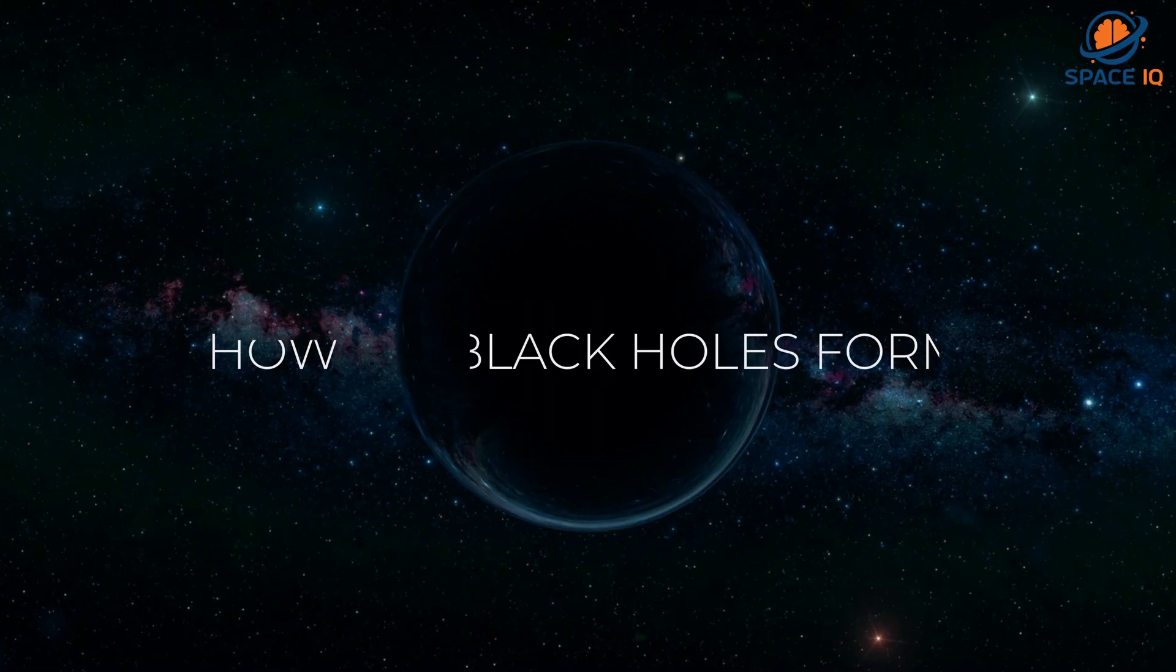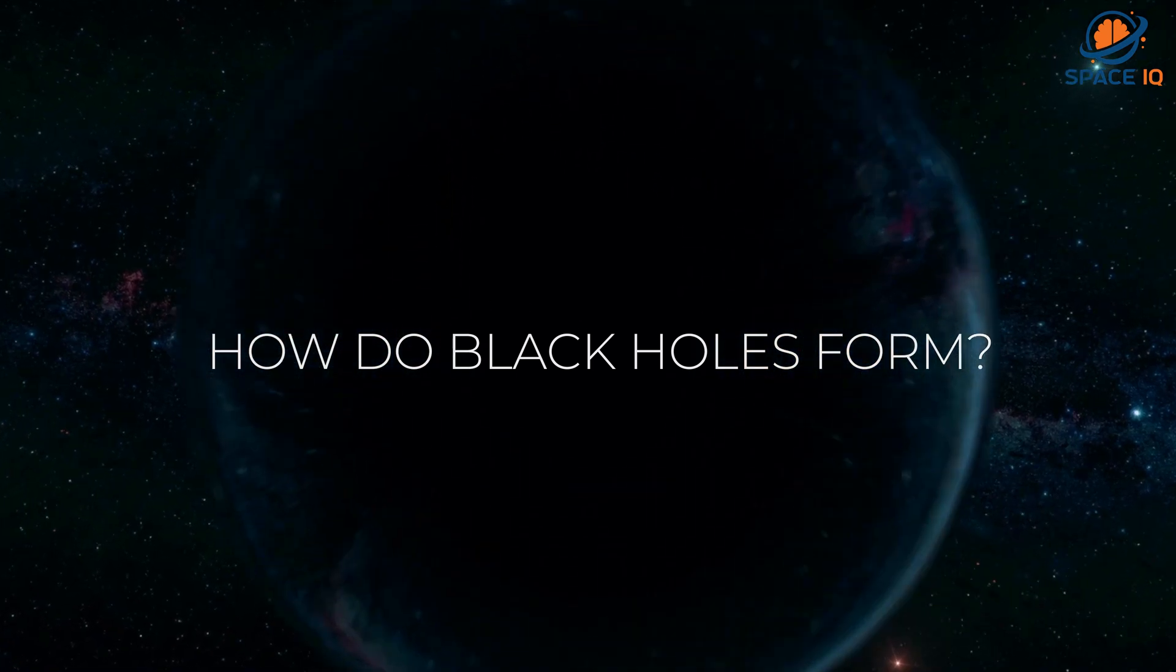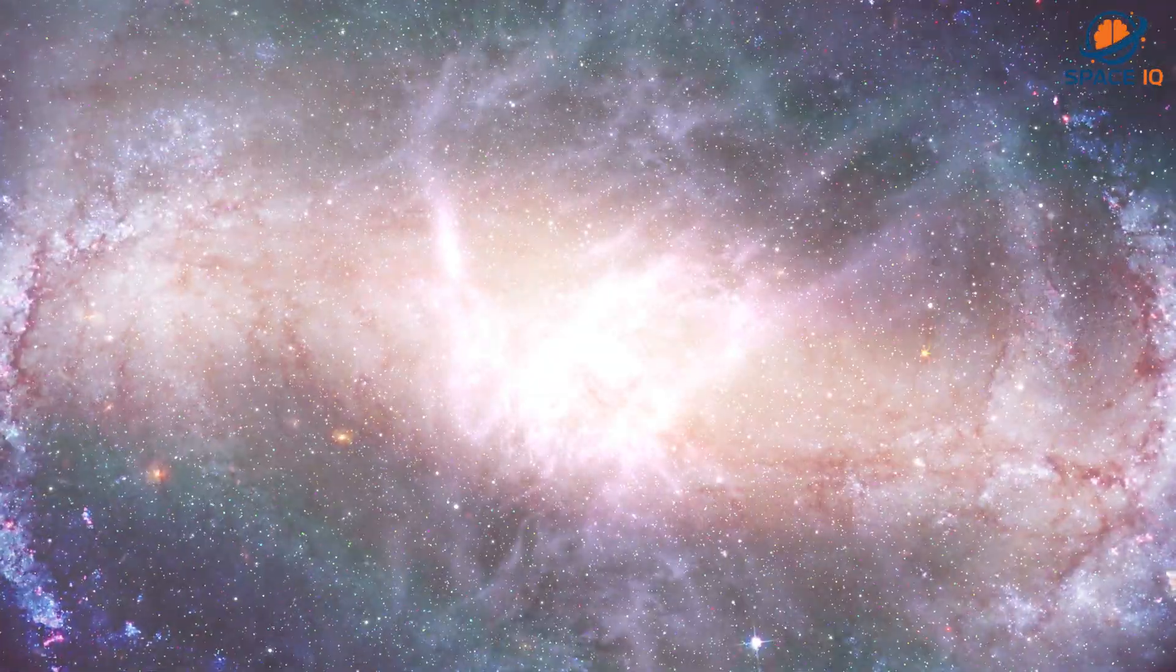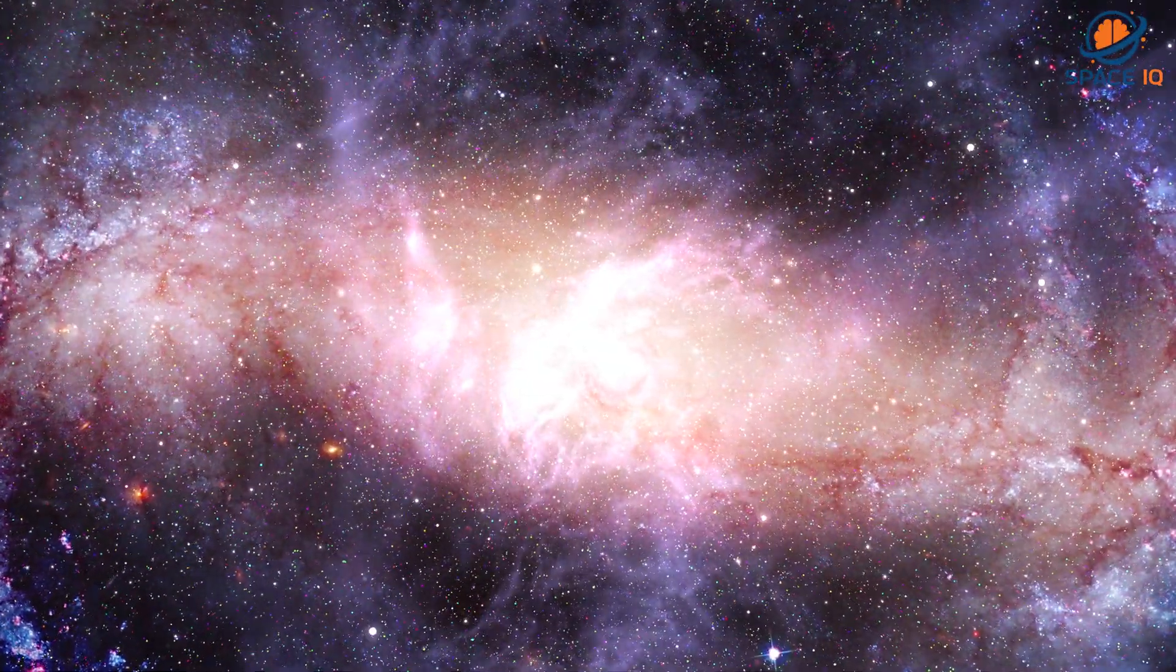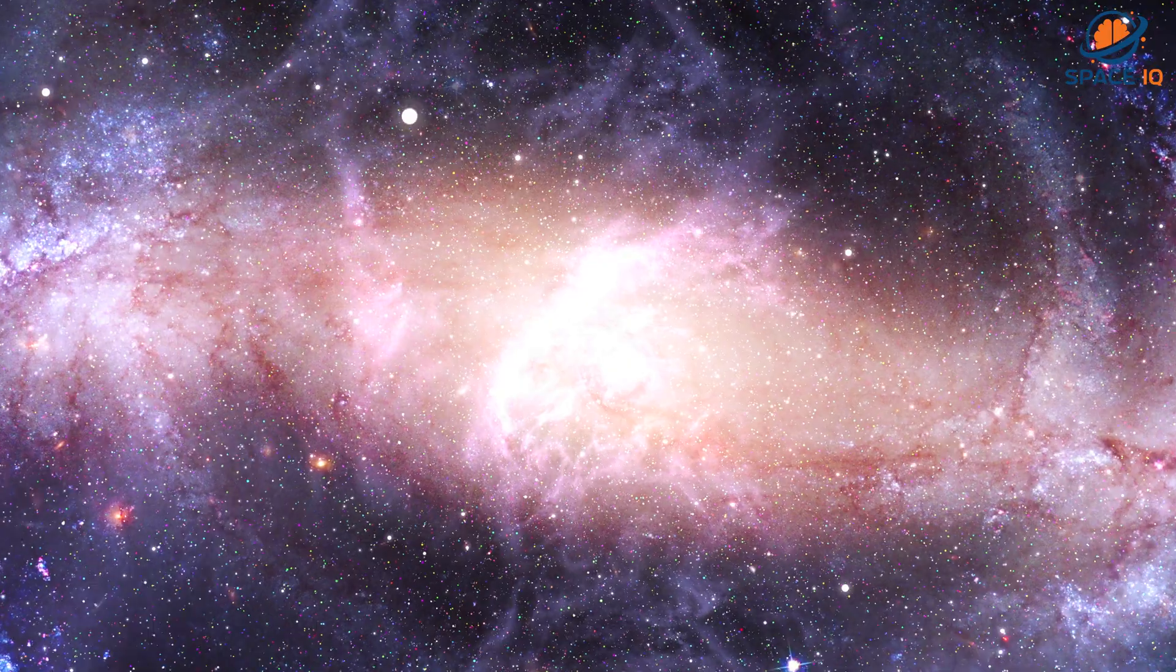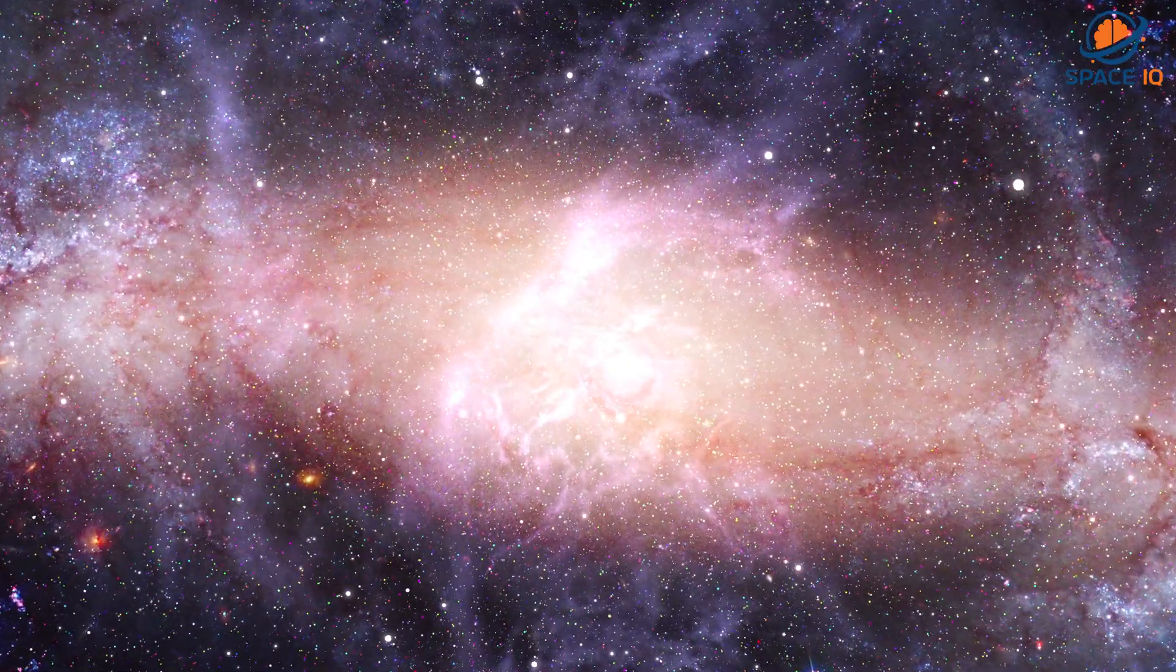How do black holes form? Scientists think the smallest black holes formed when the universe began. Stellar black holes are made when the center of a very big star falls in upon itself or collapses.